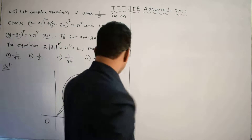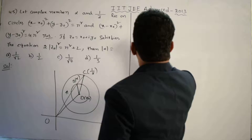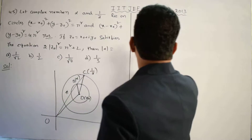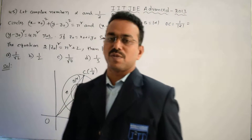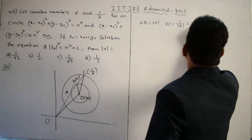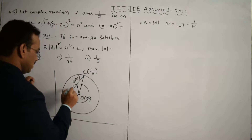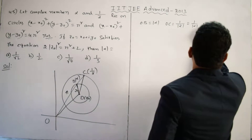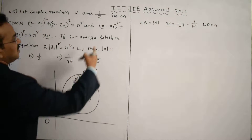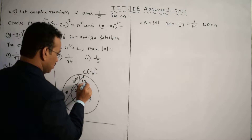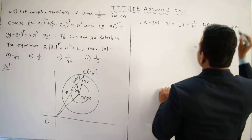From the figure: OB equals |α|, and OC equals 1/|ᾱ|, which equals 1/|α| since |ᾱ| = |α|. The radius of the inner circle is r, so BD = r. The radius of the outer circle is 2r, so CD = 2r.